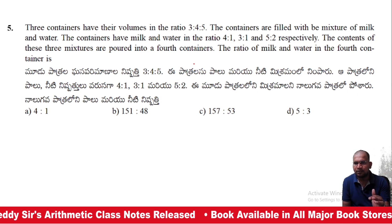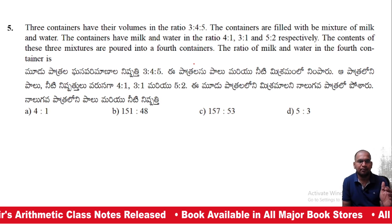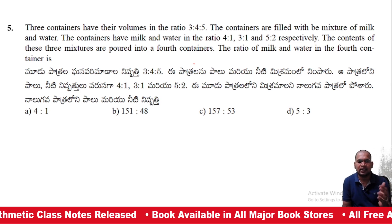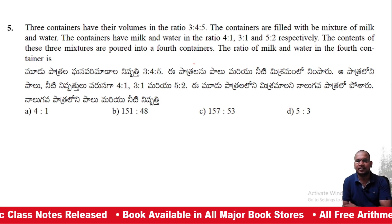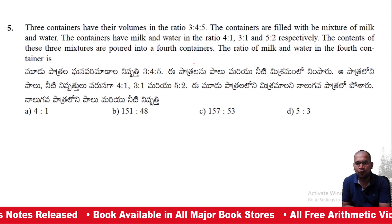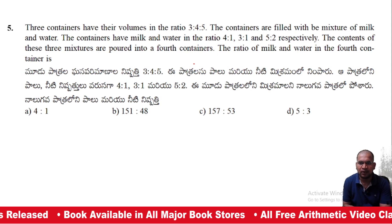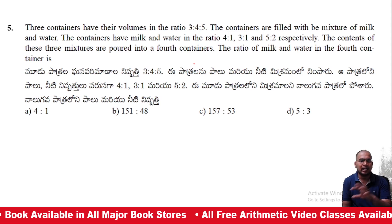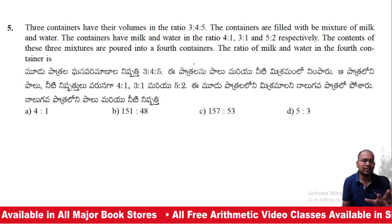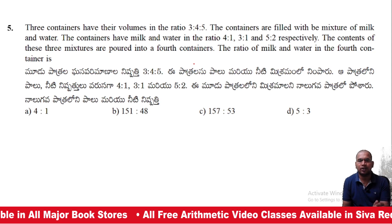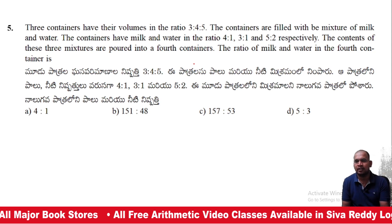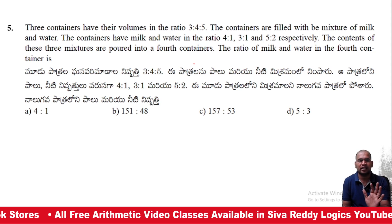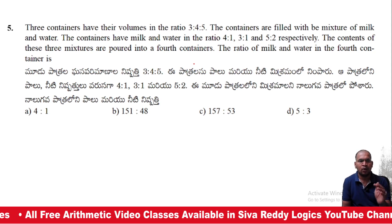The containers are filled with milk and water. The containers have milk and water in the ratios 4:1, 3:1, and 3:2. The contents of these three containers are poured into a 4th container. The ratio of milk and water in the 4th container is what?